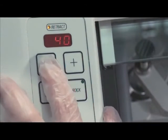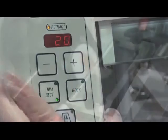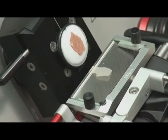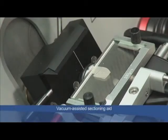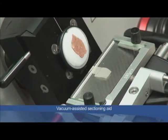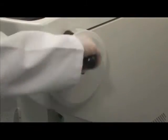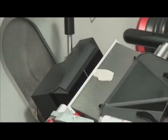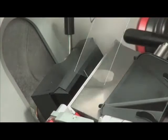Self-explanatory buttons and easy-readable LED displays simplify the cryo-sectioning process. In sectioning mode, the vacuum sectioning aid ensures optimum section stretching. The result is a perfectly prepared thin section.